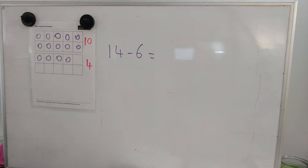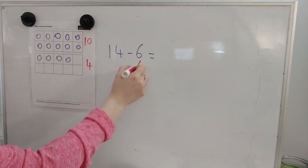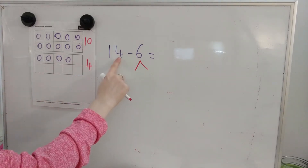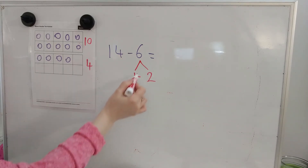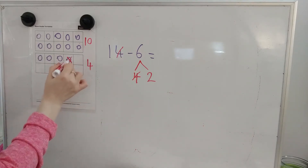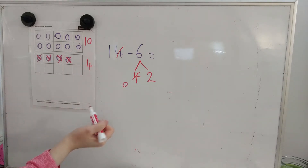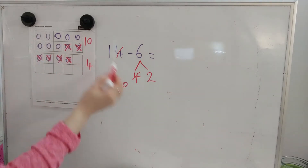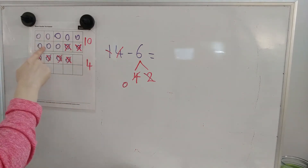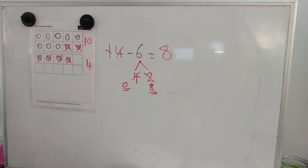Let's do 14 minus 6, which is letter C. Inside the 14, there is a 10 and a 4. I'm going to take away a 6. Inside the 6, there is a 4 and a 2. Take the 4 from the 4. 1, 2, 3, 4. What's left? 0. Take the 2 from the 10. 1, 2. What's left? 5, 6, 7, 8. Add those leftovers. 0 plus 8 is 8.